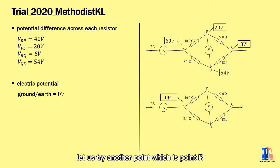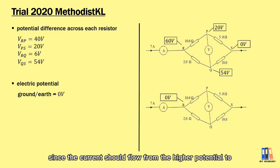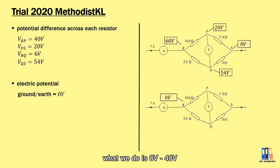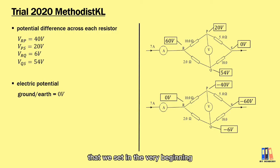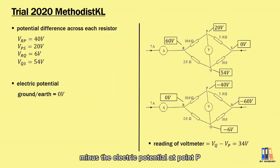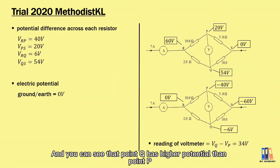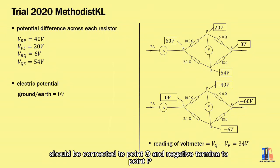You can also set the reference point at any point, such as point R, though this gives negative values. The potential at point P would be zero minus 40 equals negative 40 volts, point S gives negative 60 volts, and point Q gives negative 6 volts. The electric potential values depend on the reference point chosen. From these values, the voltmeter reading equals the electric potential at point Q minus the electric potential at point P, giving 34 volts. Since point Q has higher potential than point P, the positive terminal of the voltmeter should be connected to Q and the negative terminal to P.